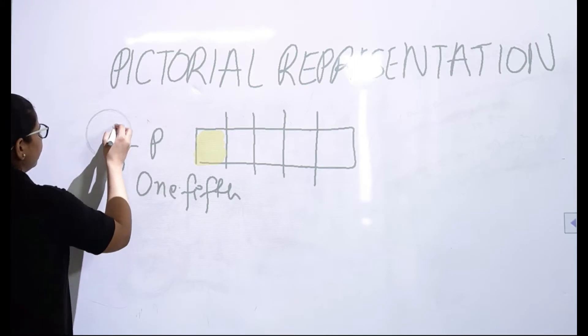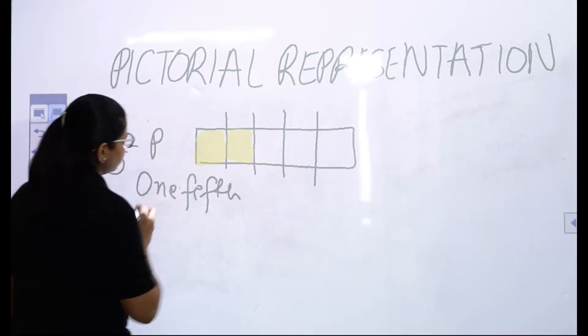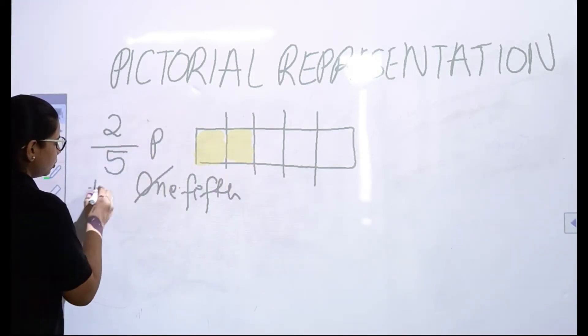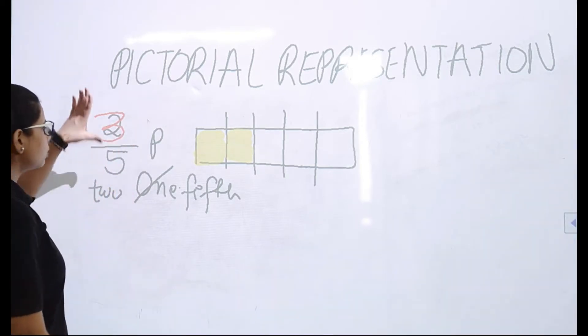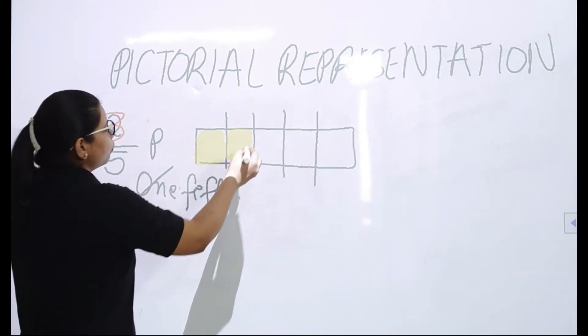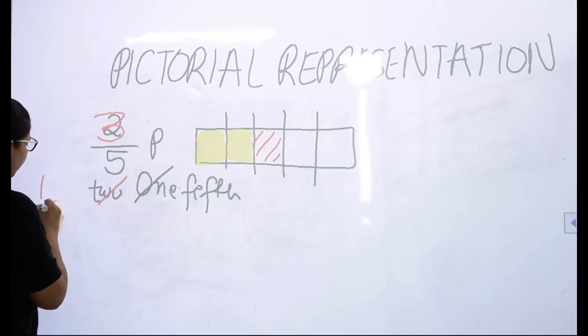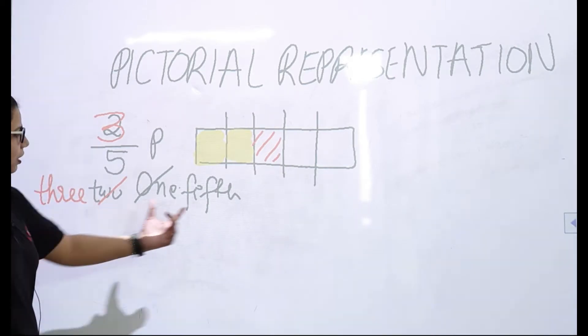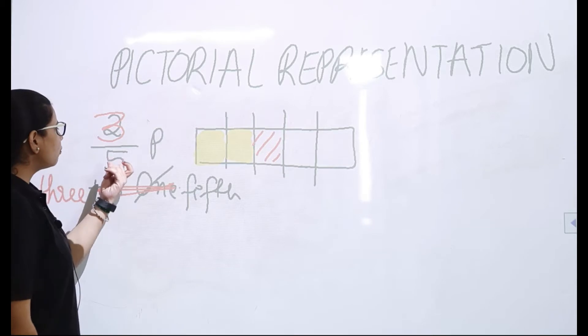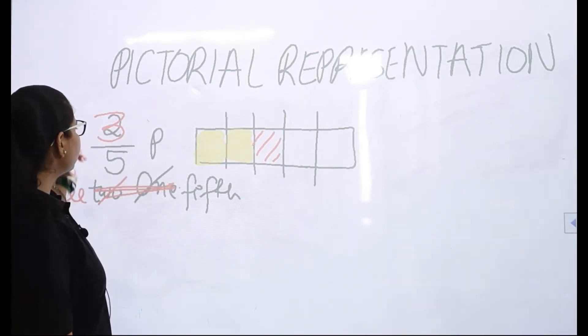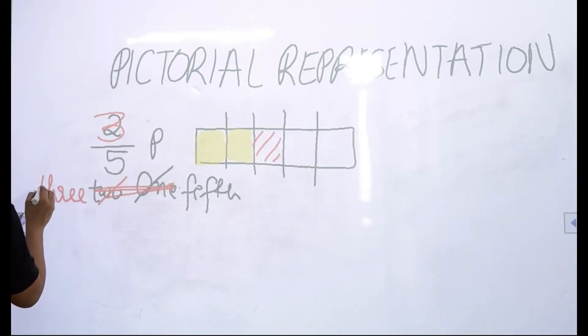If I say represent 2 fifth, then what you will be doing? You will be coloring this also and the name here will be 2 fifth. If I say represent 3 fifth, it's also a fraction, proper fraction. So we will be taking one more and it is 3 out of 5, 3 fifth. That means out of 5 parts, if the numerator is smaller than the denominator, we will be just going to color more and more parts. This is the representation of proper fraction.